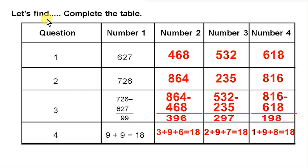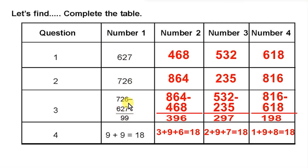Let's find out and complete the table. Question 1: Number 627. Reverse the digits to get 726. Subtract: 726 minus 627 gives 99. Add the digits: 9 plus 9 is 18.